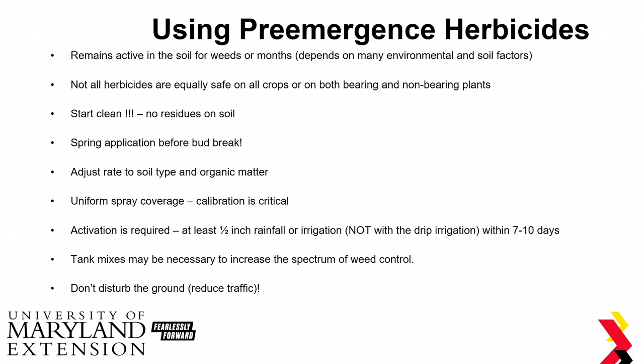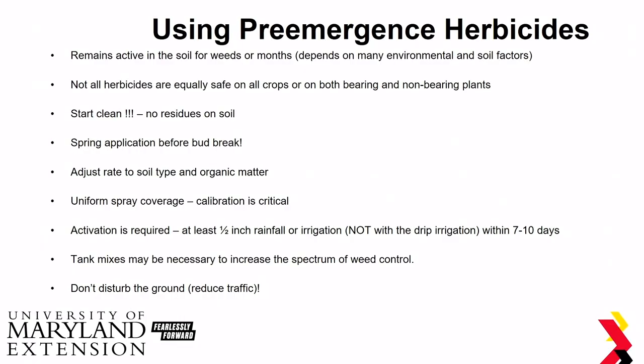Rainfall is crucial for activation — with pre-emergence herbicides you need about a half inch of rainfall or irrigation, but not with drip irrigation, which is pretty much just going to wash your herbicide out of the treated zone. You need that rainfall or irrigation within about seven to ten days. Given that not all pre-emergence herbicides control all weeds, tank mixes may be necessary. Once you've applied your pre-emergence herbicide, it's a good idea to reduce traffic and not disturb the ground any more than you already have.